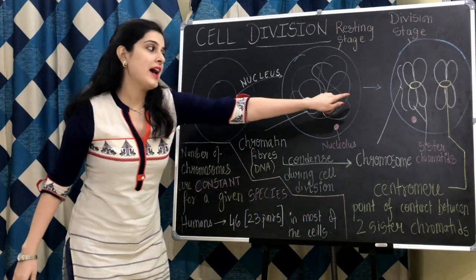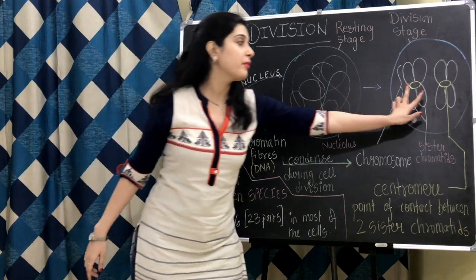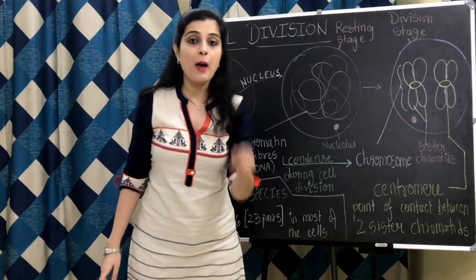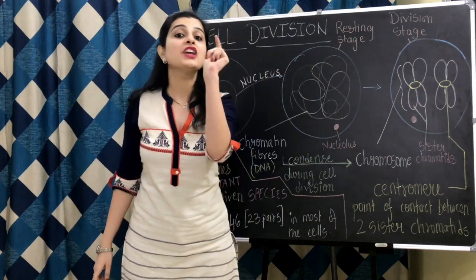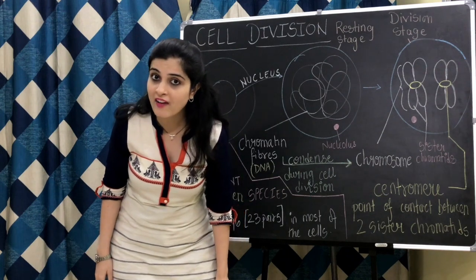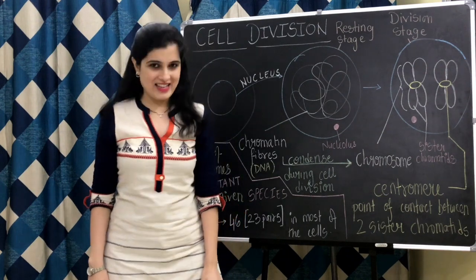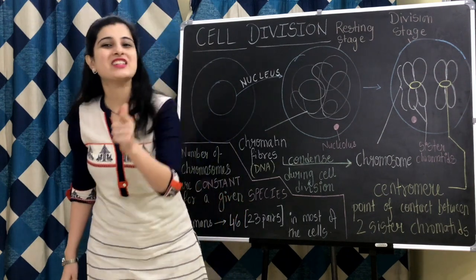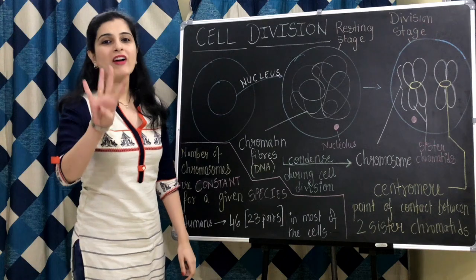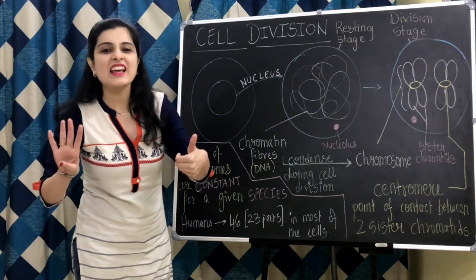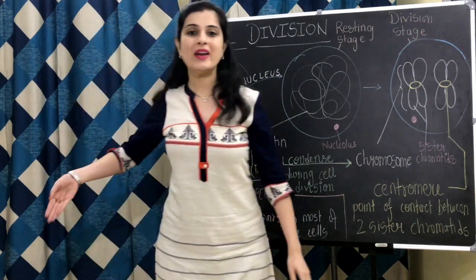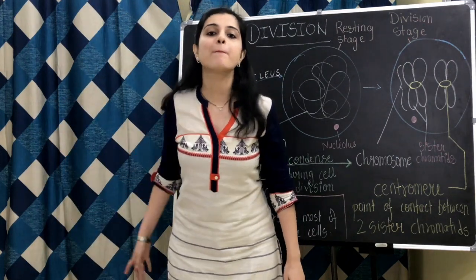So in this diagram, I have made only 2 chromosomes. But in your cell, how many chromosomes will you have? You guessed it right — you will have 46 chromosomes present in 23 pairs.